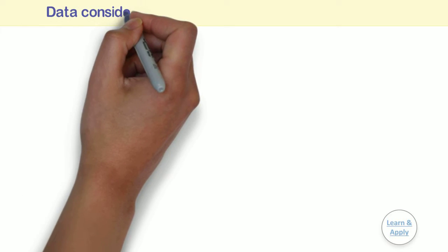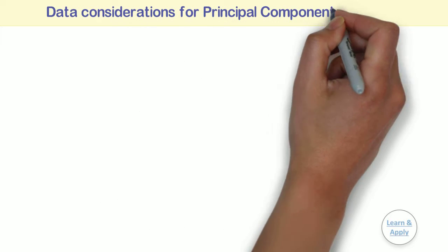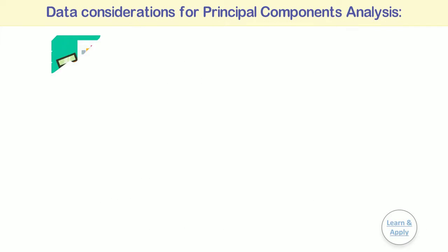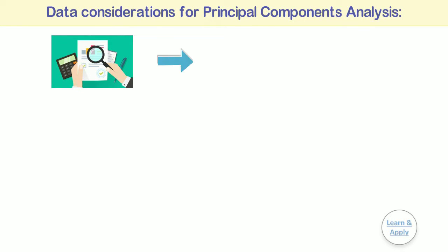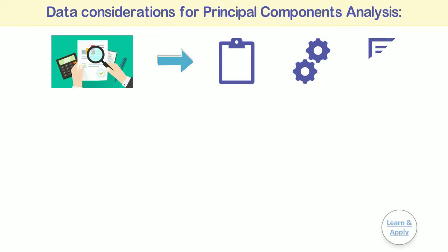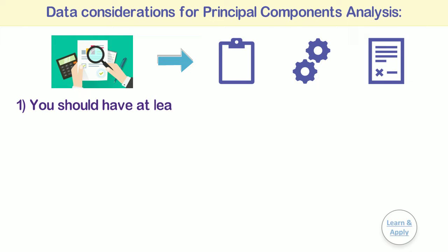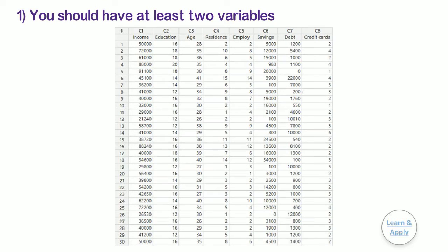Data considerations for principal component analysis. To ensure that your results are valid, consider the following guidelines when you collect the data, perform the analysis, and interpret your results. In the case of principal component analysis, there is only one requirement of data, and that is you should have at least two variables, and the measurements for each variable should be recorded in separate numeric columns.